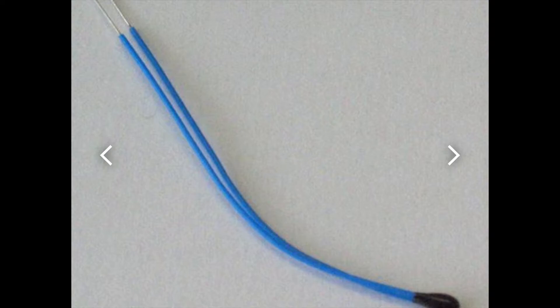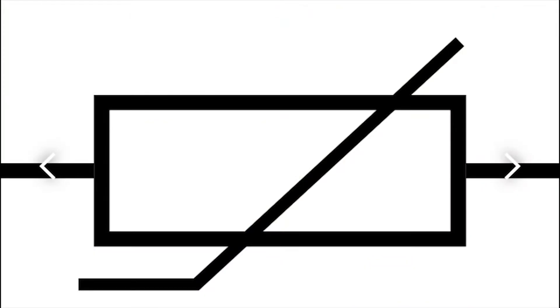A thermistor is a type of resistor whose resistance depends on temperature, more so than in a standard resistor. The word is a combination of thermal and resistor. Thermistors are widely used in inrush current limiters, temperature sensors, and so on. That is the electronic symbol of a thermistor.